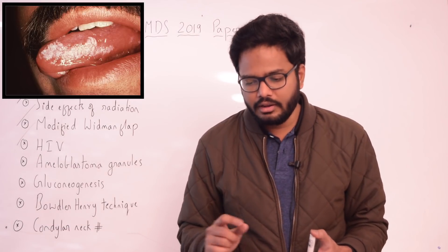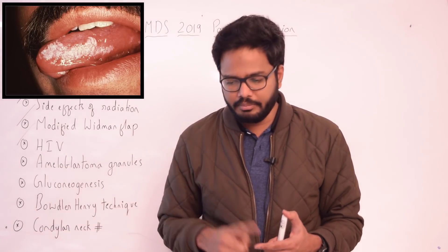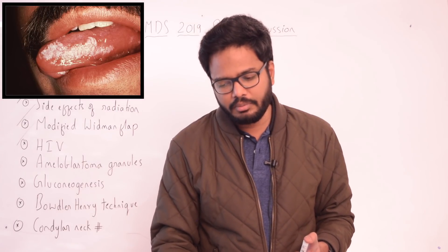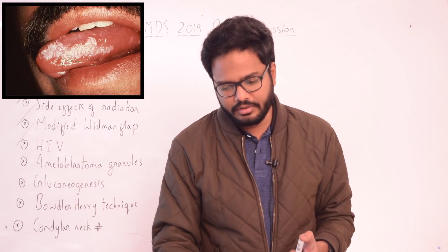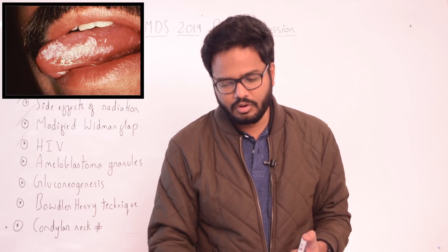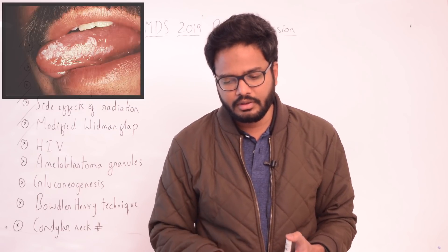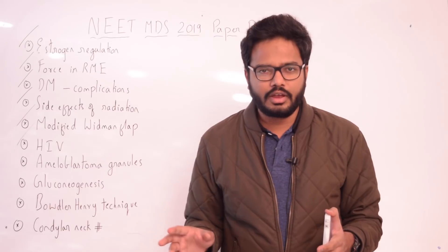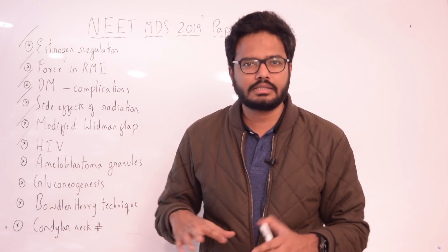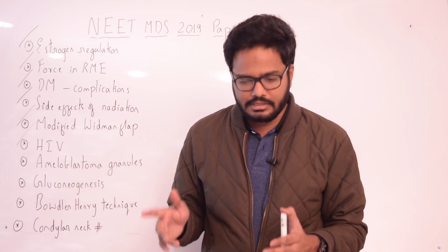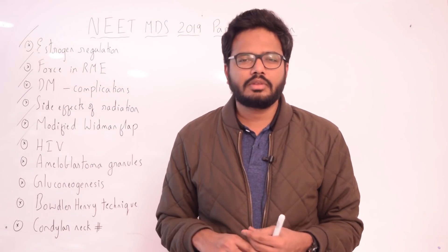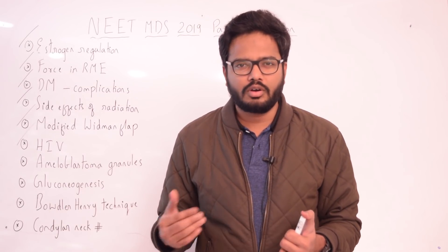Oral hairy leukoplakia — corrugated white plaques running vertically on the side of the tongue — is virtually pathognomonic of HIV, usually asymptomatic, and caused by Epstein-Barr virus. A question asked: in HIV, which of the following is present except — Kaposi's sarcoma, hairy leukoplakia, or ANUG? ANUG is not typically seen nowadays.